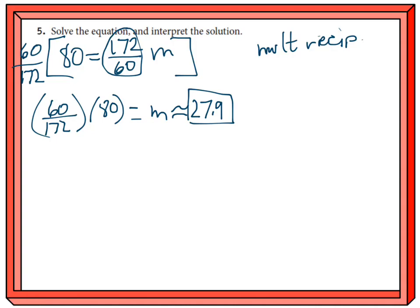And now we have to interpret that. What does that mean? It's the value for m. m was the number of minutes, the number of minutes in order to get to the hospital. So what this means is that it's going to take about 28 minutes for that helicopter to get to the hospital.